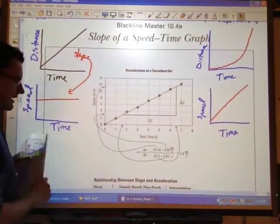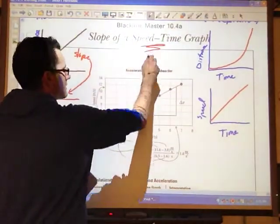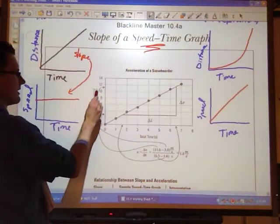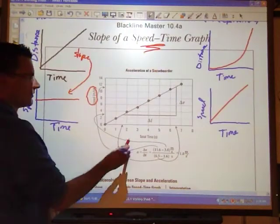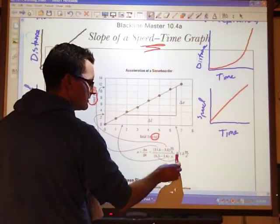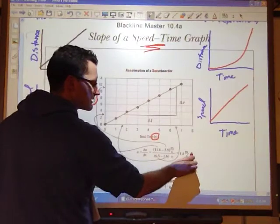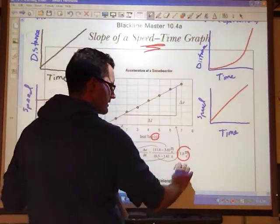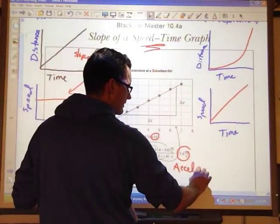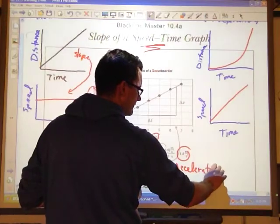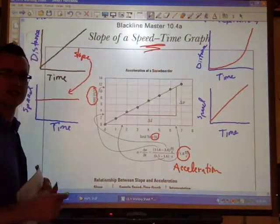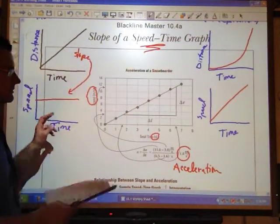Now, if we look at the slope of a speed-time graph this time, take a look here, we'll have meters per second over seconds, meters per second per second, or meters per second squared, and of course, that is acceleration. So the slope of a speed-time graph gives you acceleration.